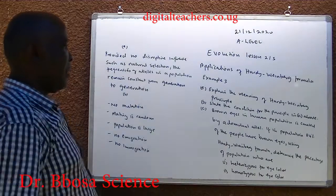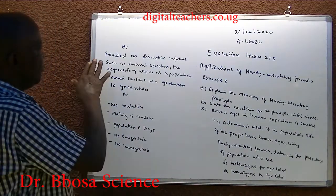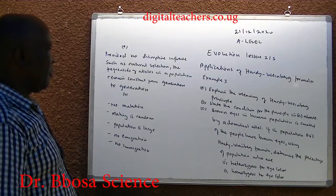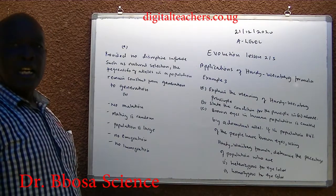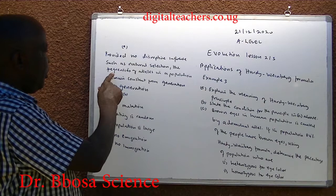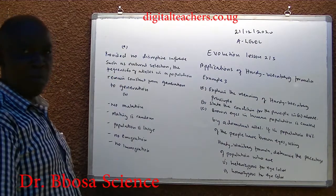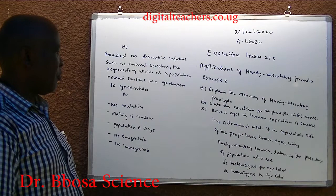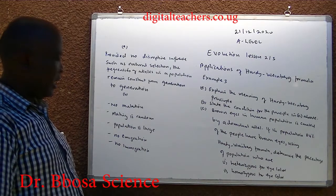Example 3. Explain the meaning of the Hardy-Weinberg principle. Provided there is no disruptive influence such as natural selection, the frequencies of alleles in the population remain constant from generation to generation.